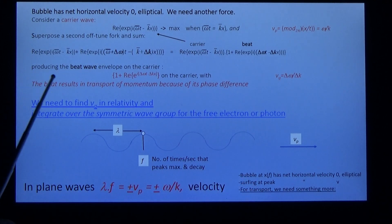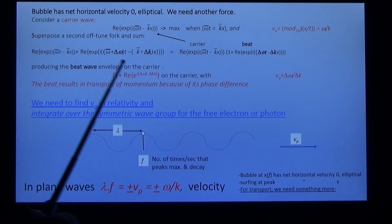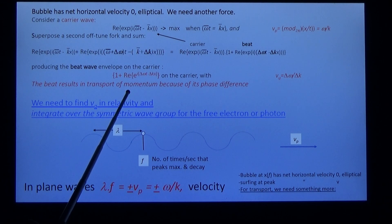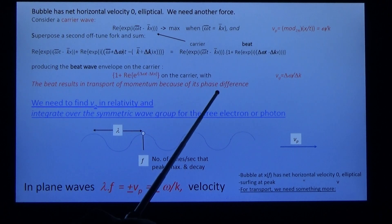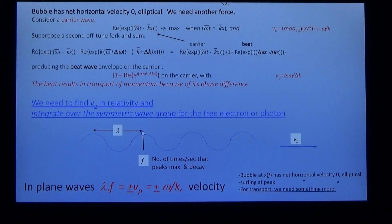So we produce a beat wave envelope on the carrier of this form, and the beat results in transport of momentum because of the phase difference between omega over k and d omega by dk. What we need to do now is to find the group velocity in relativity and integrate over the symmetric wave group for the free electron or photon.